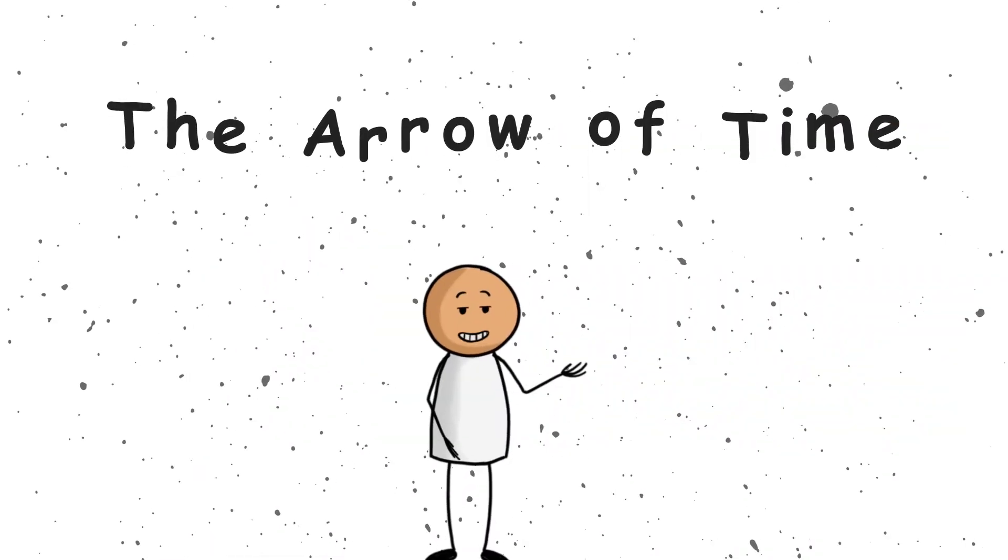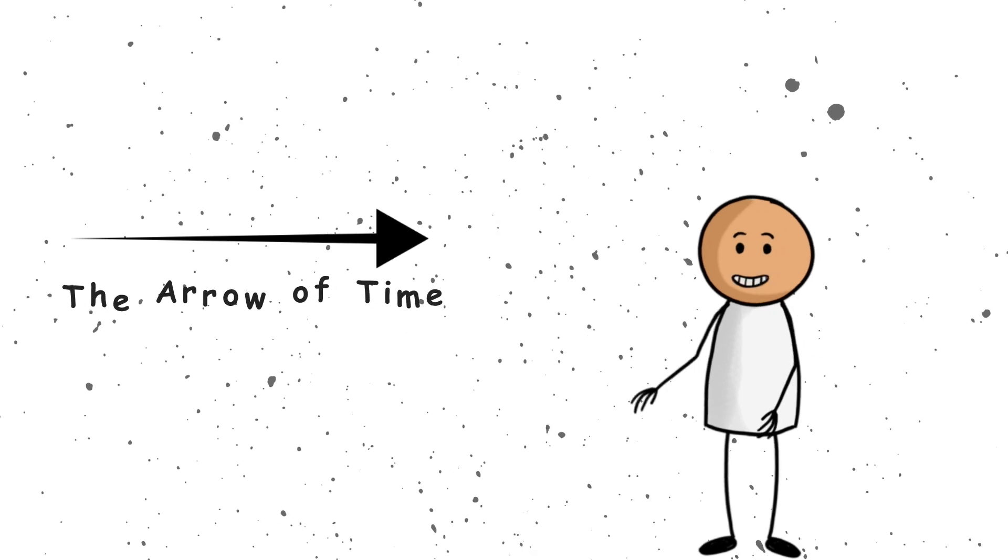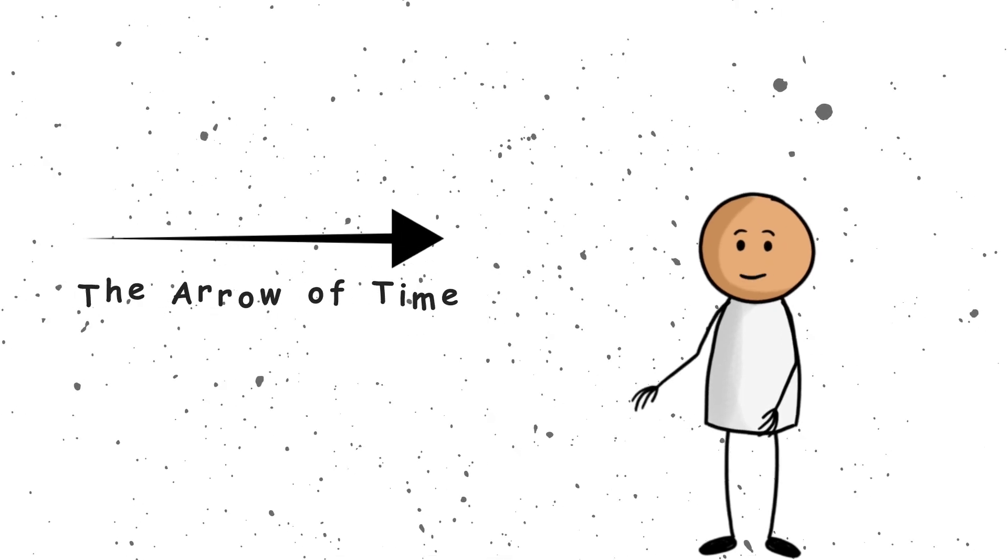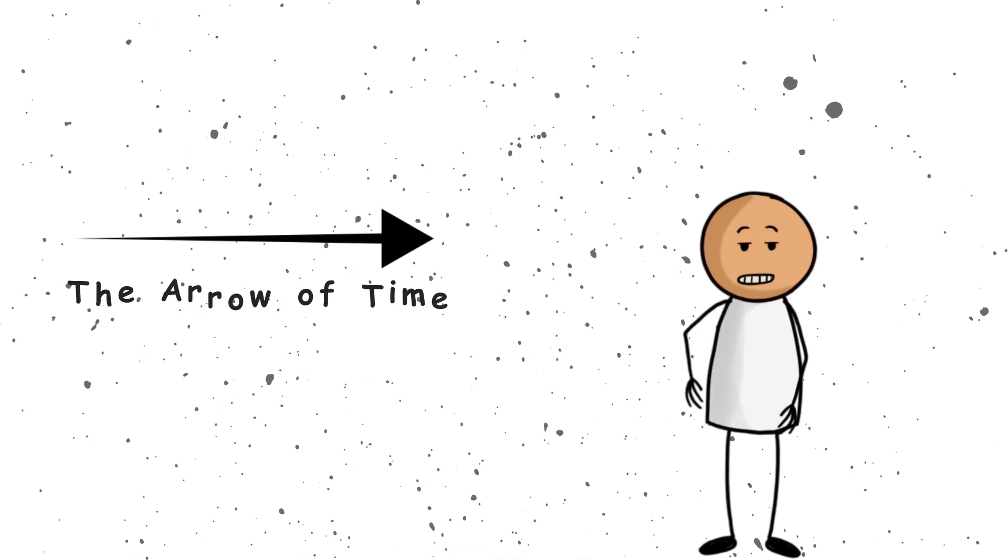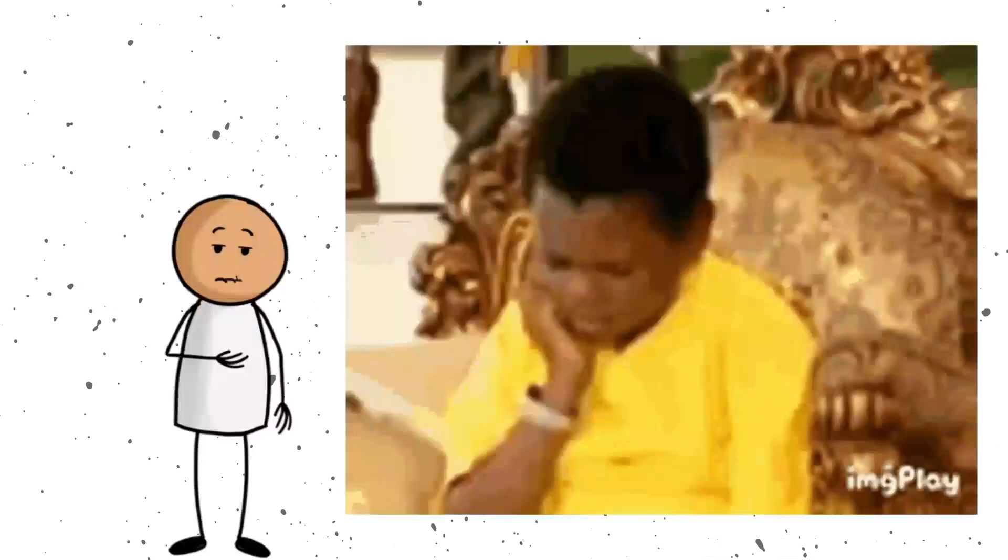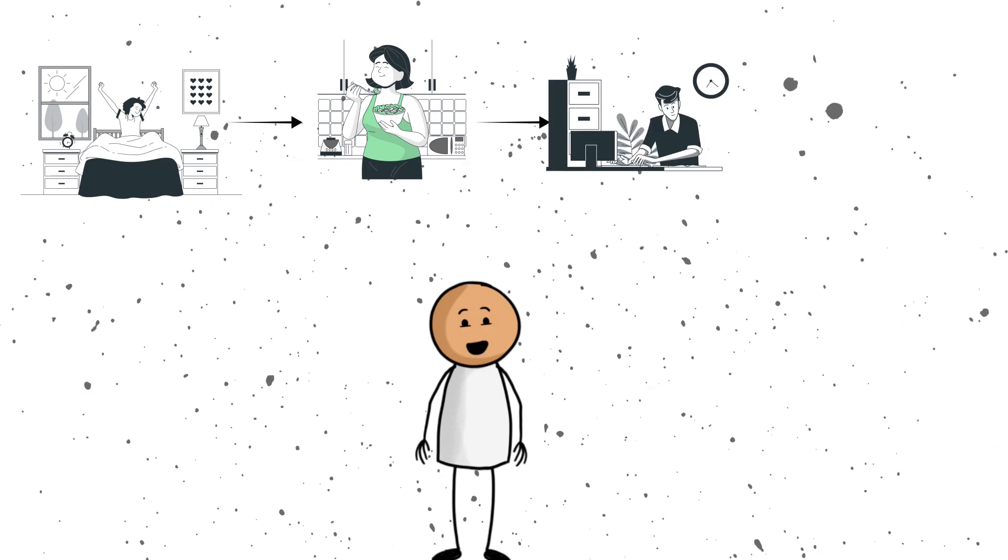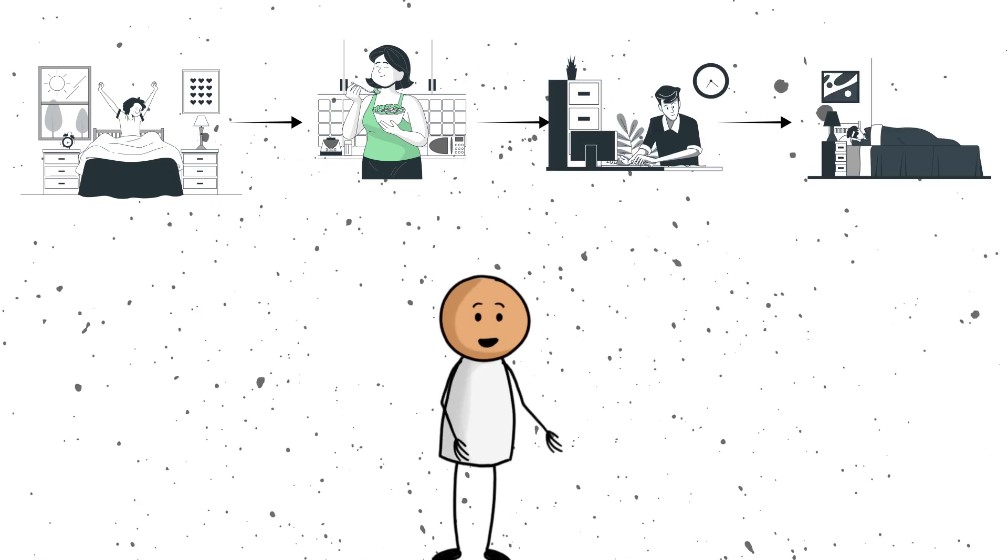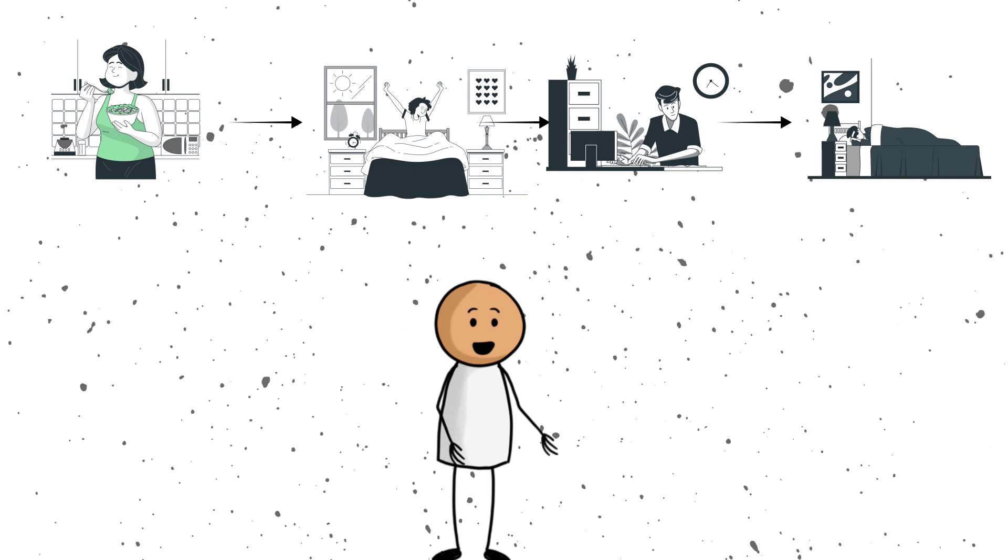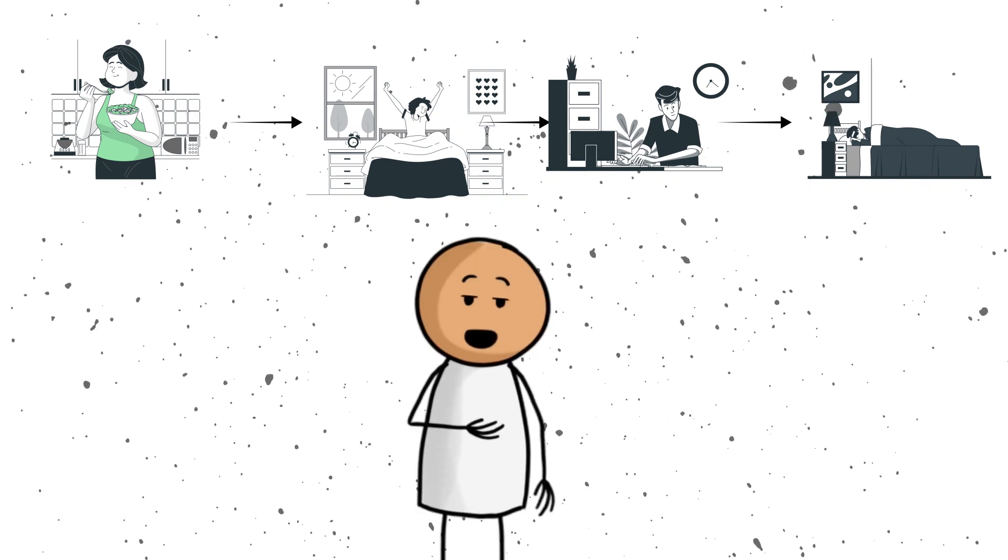3. The Arrow of Time. Okay, now let's talk about something that affects all of us every single day. The Arrow of Time. Have you ever noticed how time seems to only move in one direction? You wake up, you eat breakfast, you go about your day, and then you go to sleep. You do not suddenly wake up after dinner and have breakfast for dinner. At least not usually.